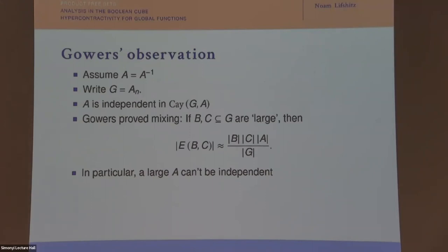Now let's discuss Gowers' proof. For simplicity and to talk about Cayley graphs, let's assume A equals its inverse — otherwise we'd have to talk about directed Cayley graphs. The basic observation of Gowers was that A is an independent set in the Cayley graph.